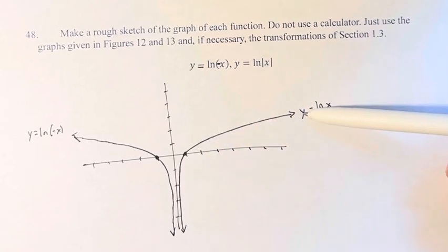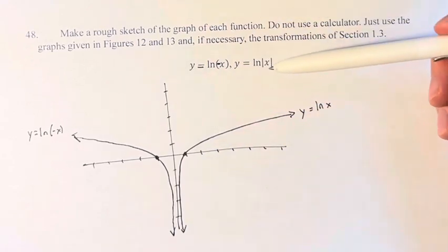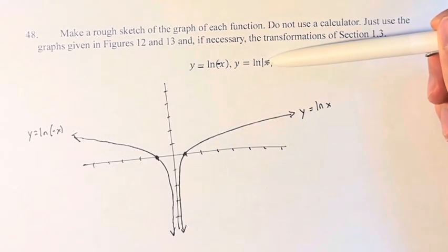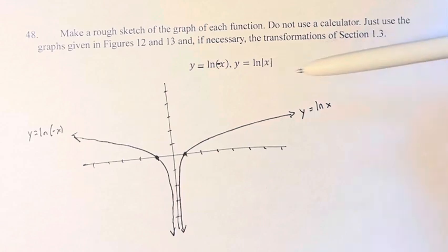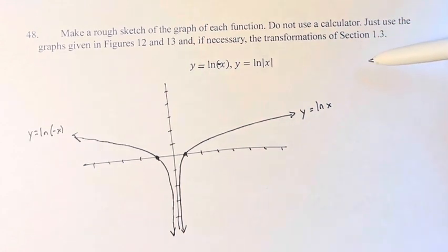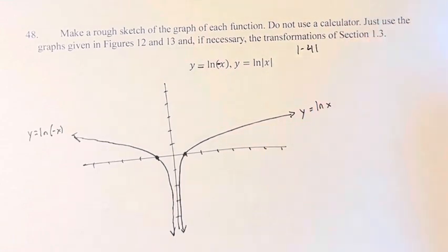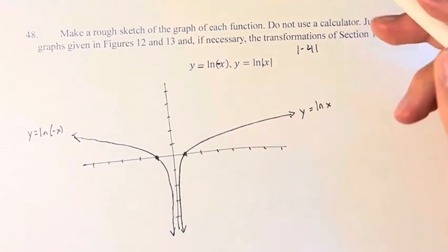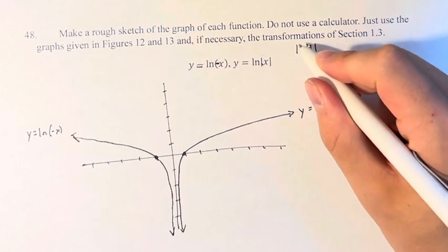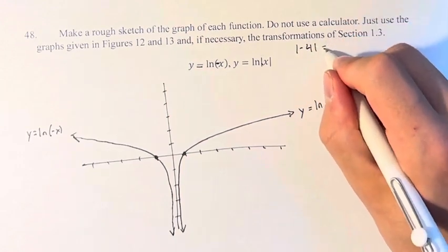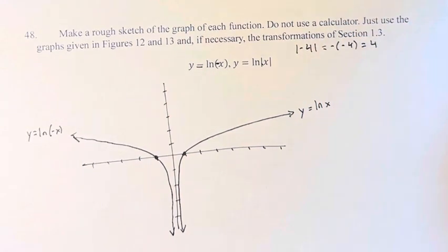And when x is negative, it's not ln(x); it's ln(-x). To illustrate what I mean by that: the absolute value of -4, when x is a negative number, is not -4, it's positive 4.